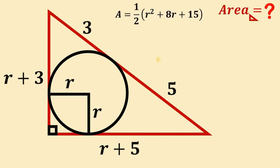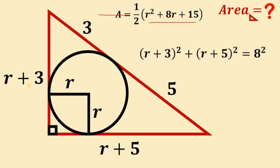To get the value of the expression R squared plus 8R plus 15, we will use the Pythagorean theorem. We have A squared, where A represents R plus 3, and the other leg is R plus 5. The hypotenuse equals 8, because 3 plus 5 equals 8.